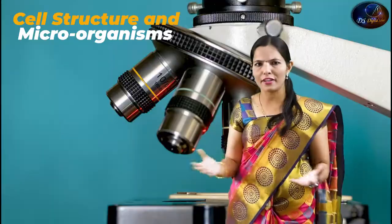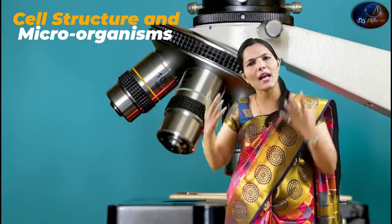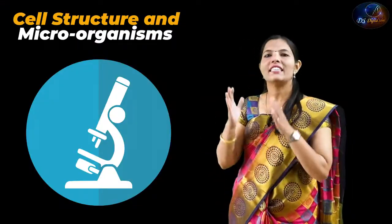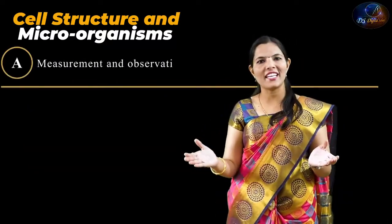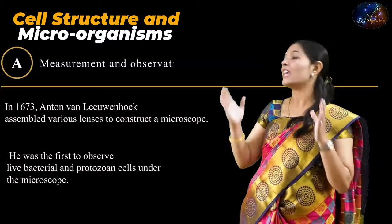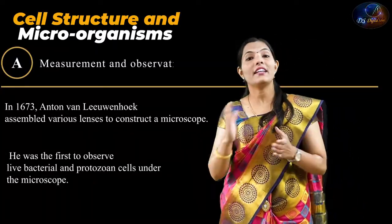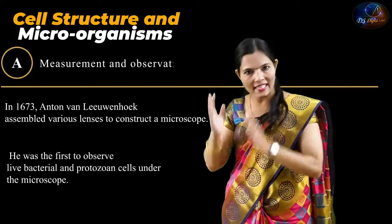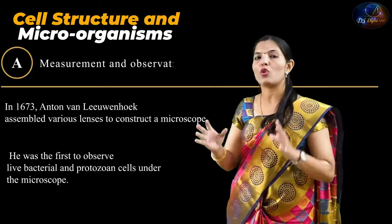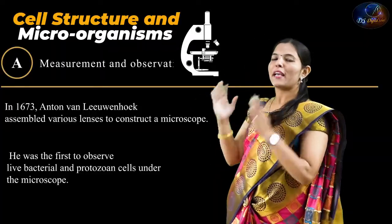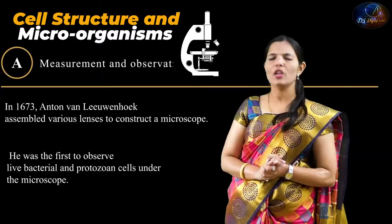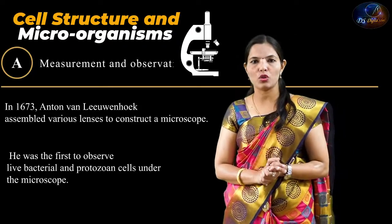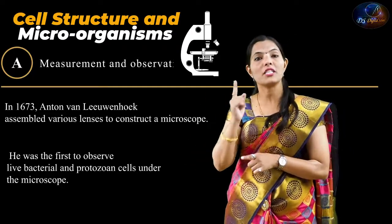The question of how to observe or measure the cell goes back to a scientist in 1673 — a scientist named Anton van Leeuwenhoek. He collected different types of lenses and built a microscope. This is very important and interesting information which is often asked in exams.